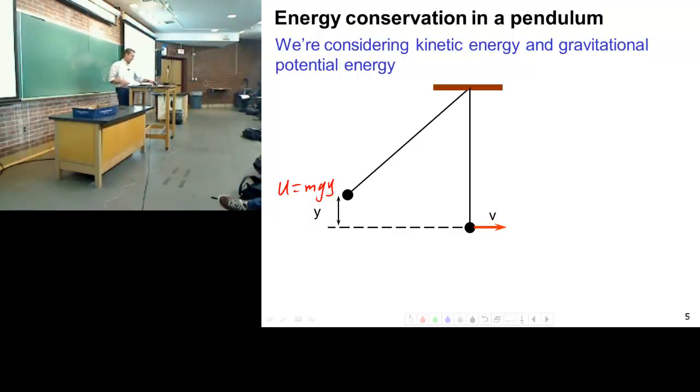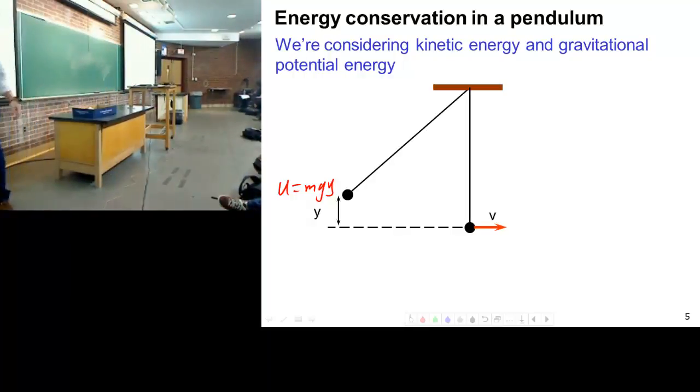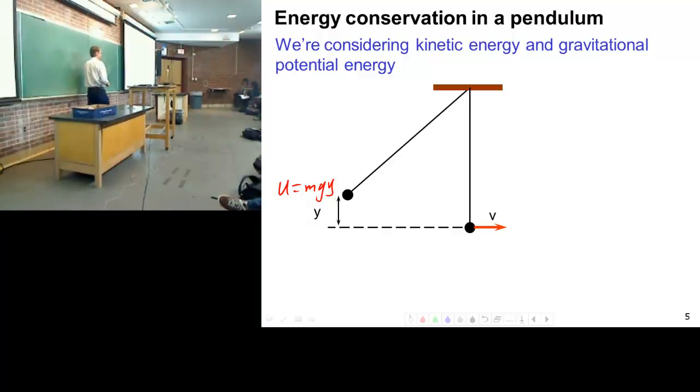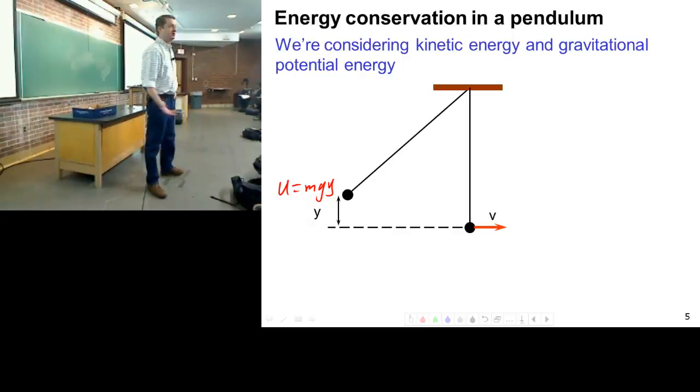So MgY. I get to the bottom. So I let the thing go. It starts to swing. Gets down to here. Swings through. What do I know about the pendulum at that point? When it's at this lowest point. Does it have any potential energy left? No. It can't get any lower. It's at its lowest point. So it's lost all its potential energy.